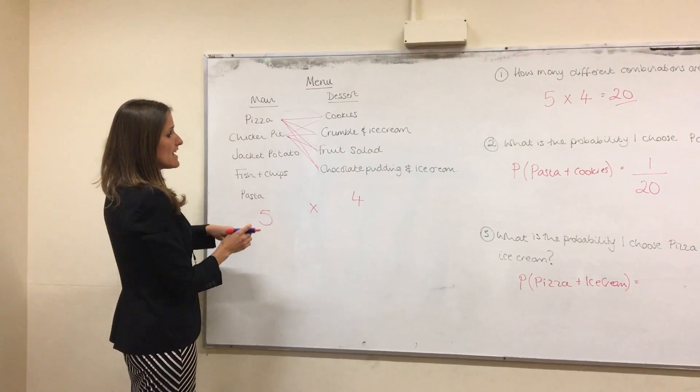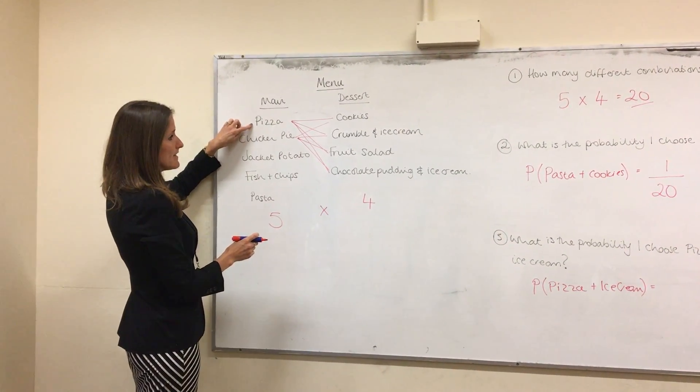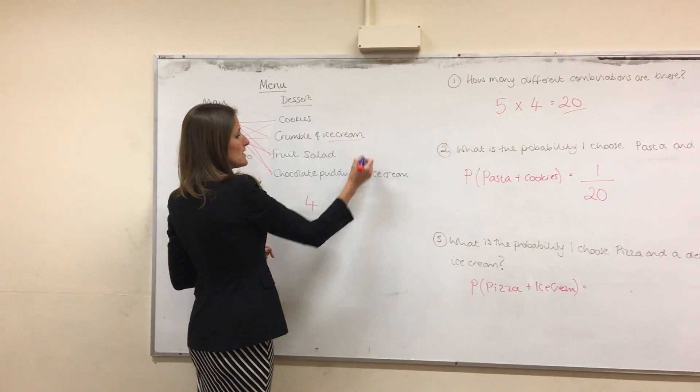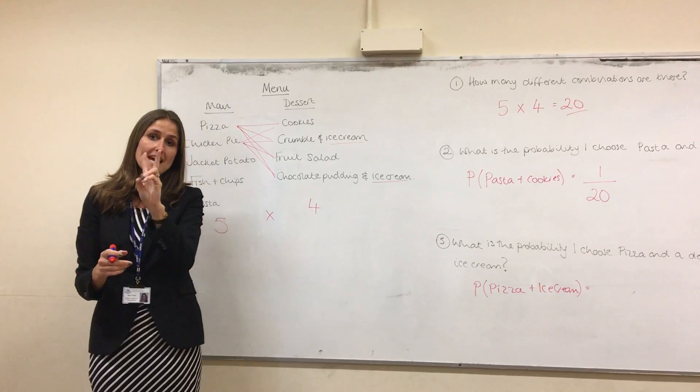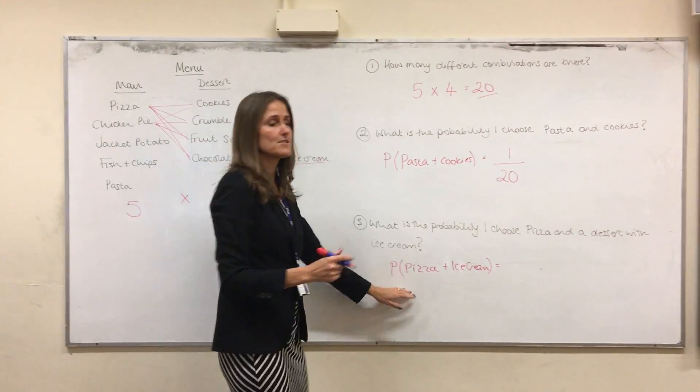So let's look over here. There's one way of choosing pizza, but I've got two different options for choosing ice cream. So there are two ways that I can fulfill this criteria.